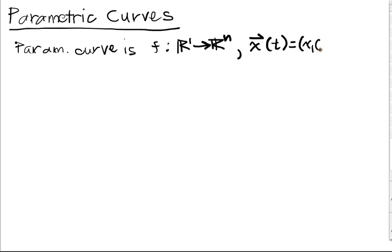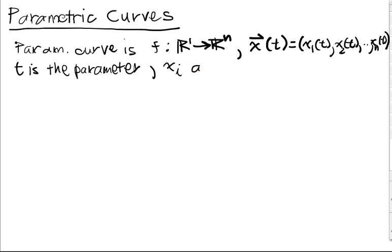We write x1 of t, x2 of t, up to xn of t. These are the component functions. We'll say that t is the parameter, and the xi functions we call coordinate functions because they're the coordinates of our trajectories.